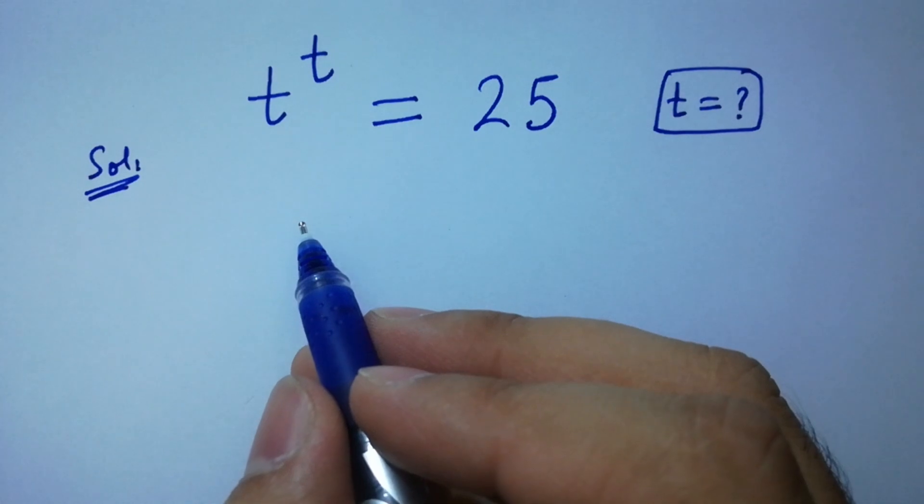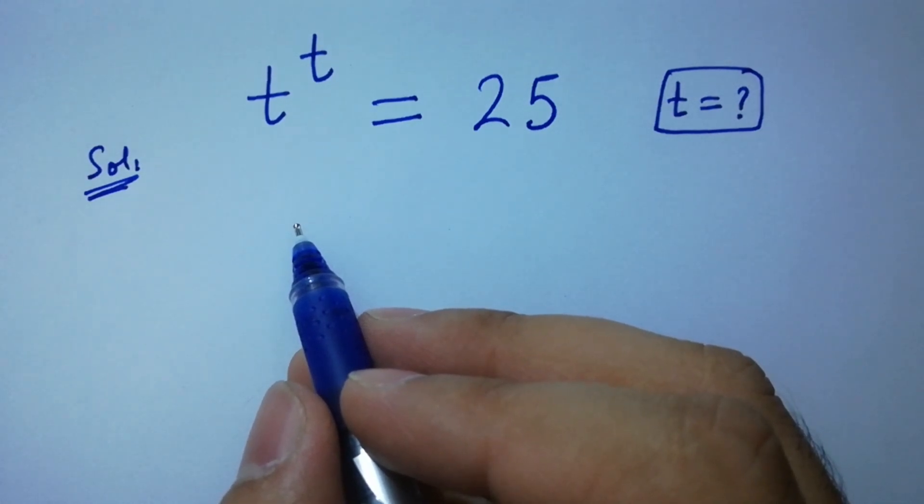To solve this, take natural log ln on both sides.